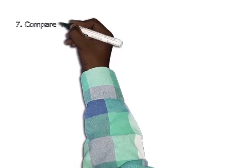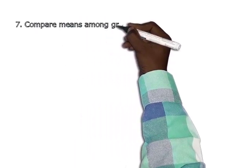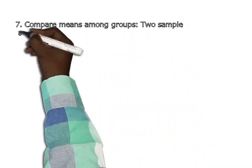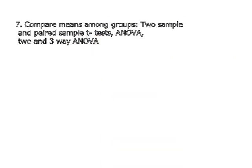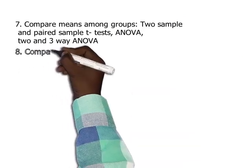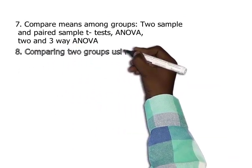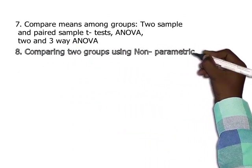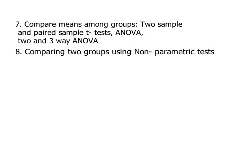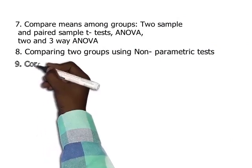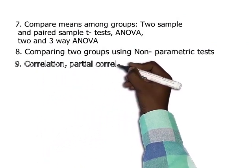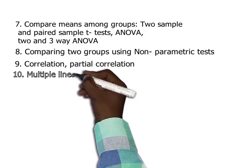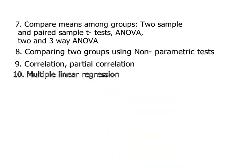7. Compare means among groups, two-sample and paired-sample T-tests, ANOVA, two- and three-way ANOVA. 8. Comparing two groups using non-parametric tests. 9. Correlation and partial correlation. 10. Multiple linear regression.